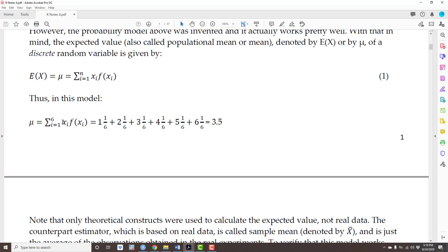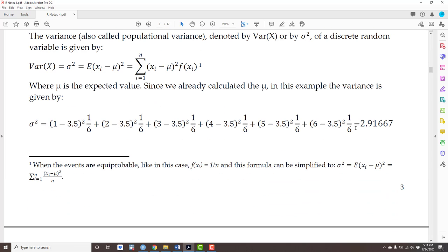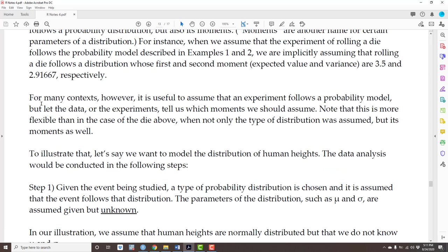Also, indirectly, we also assume that the variance is 2.91667, because the variance, which is the summation of each outcome minus the mean squared times the respective probability, is also implied in the model.